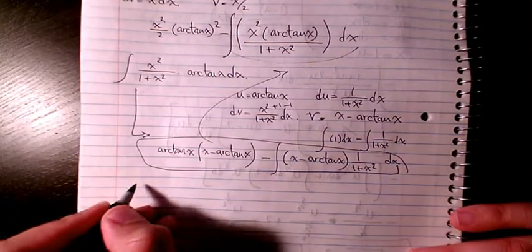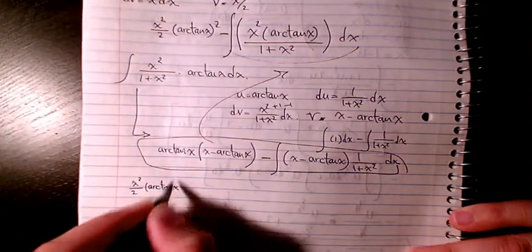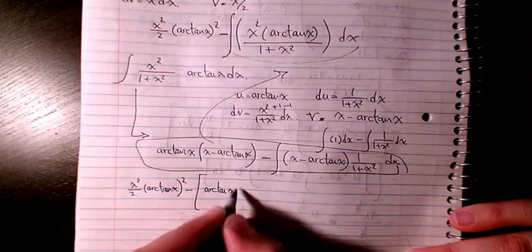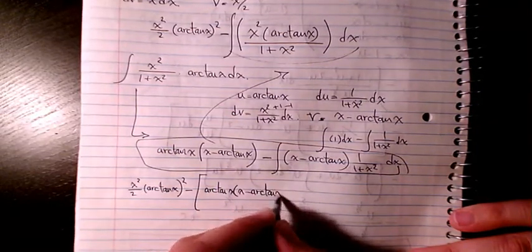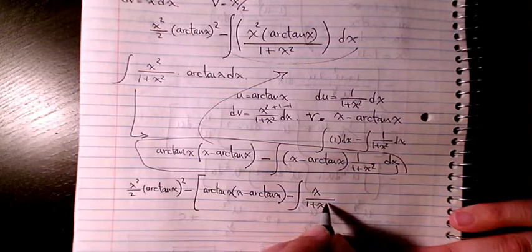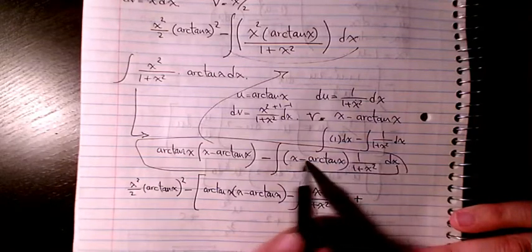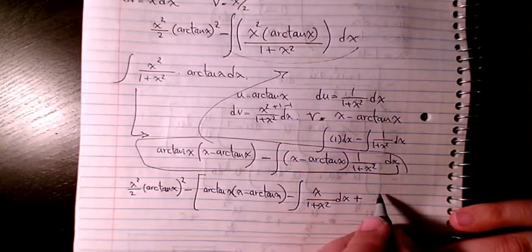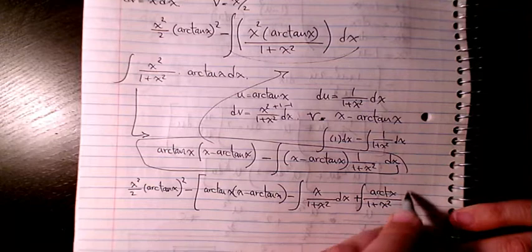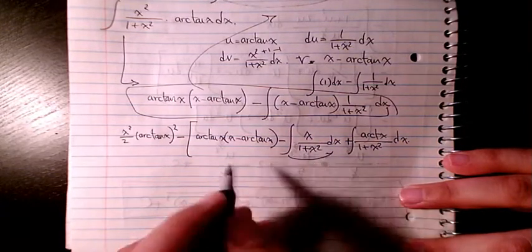Combining everything, it's going to be x²/2 · arctan(x)² minus arctan(x)·(x − arctan(x)) minus the integral of x/(1 + x²) dx, plus — because we have two negative signs — plus the integral of arctan(x)/(1 + x²) dx.